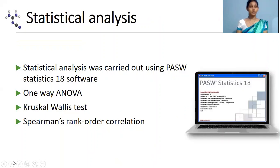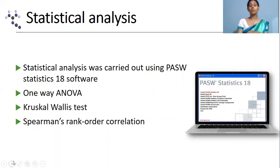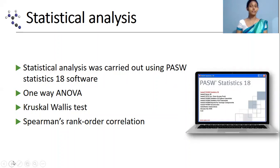After obtaining all these data, they were statistically analyzed using PASW Statistics 18 software. In order to find significant differences among factors, a one-way ANOVA test was used for normally distributed data and a Kruskal-Wallis test was used for non-normally distributed data. Finally, Spearman's rank-order correlation was also conducted.